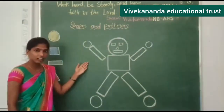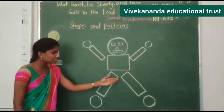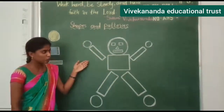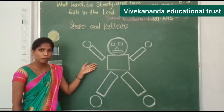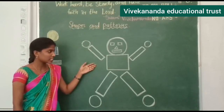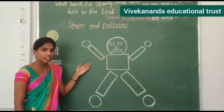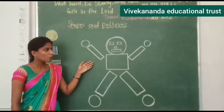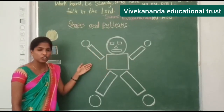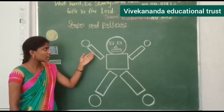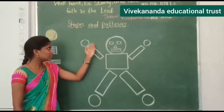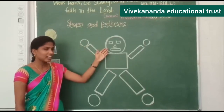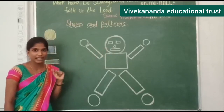Look at the board. What picture is this? It's Robo. Observe the Robo. Robo is made of different kinds of shapes. What are the shapes you have observed in this Robo? Circle, square, rectangle, and triangle. Is it right?